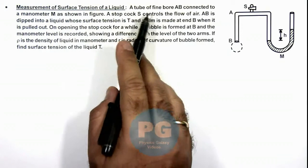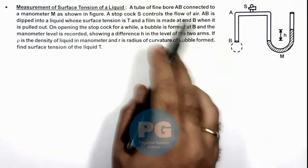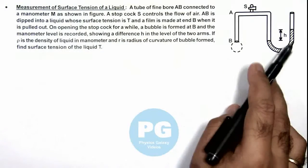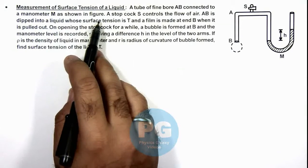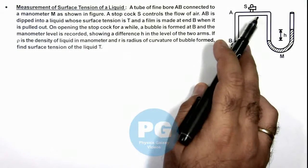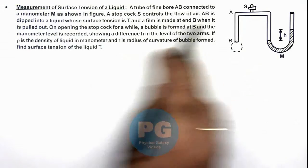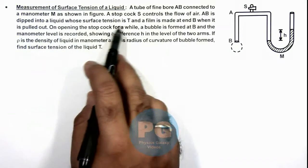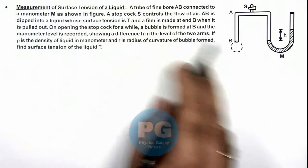We are given that a tube of fine bore AB connected to a manometer M, and a stop cock S controls the flow of air. AB is dipped into a liquid whose surface tension is T and a film is made at end B when it is pulled out.